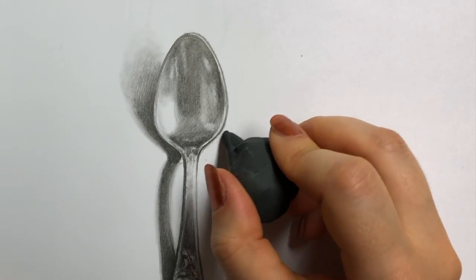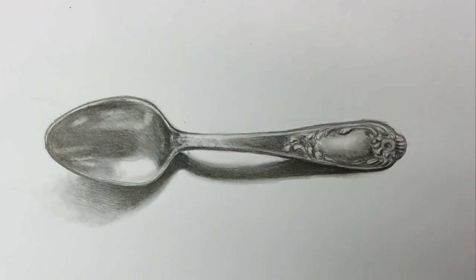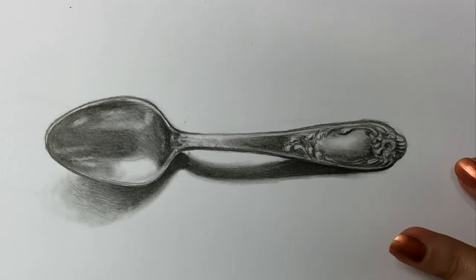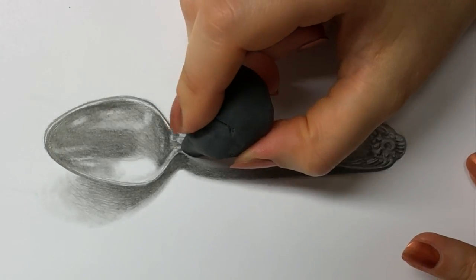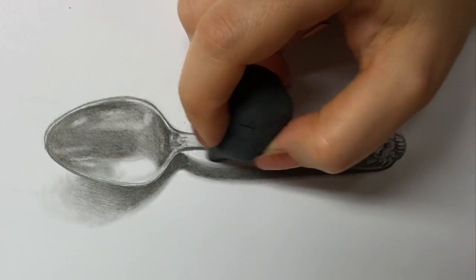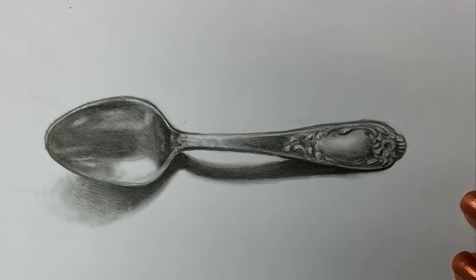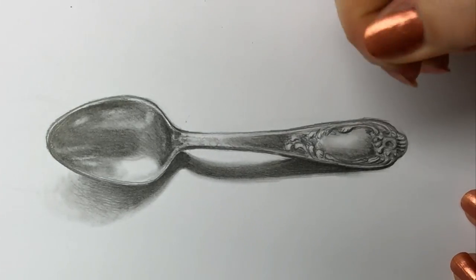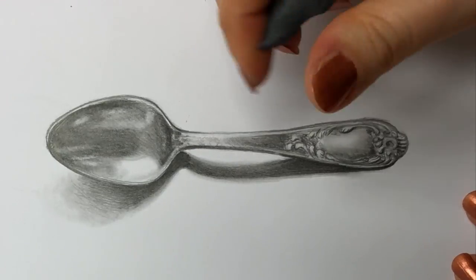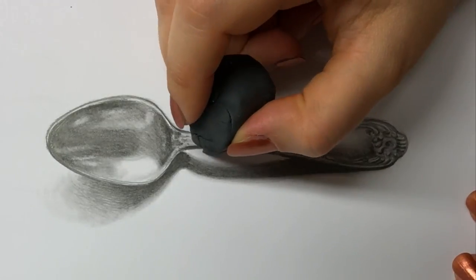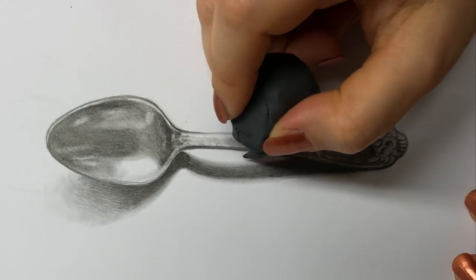If you dislike working on really small details like what I'm doing now. You always have another option. You can just draw your spoon bigger. So then all of these shadows, all of these tiny little shadows become much larger as well. Because you're working in proportion. And that way you can get away from doing these details. But in my opinion details are fun. But I do know that everyone has their own preference.